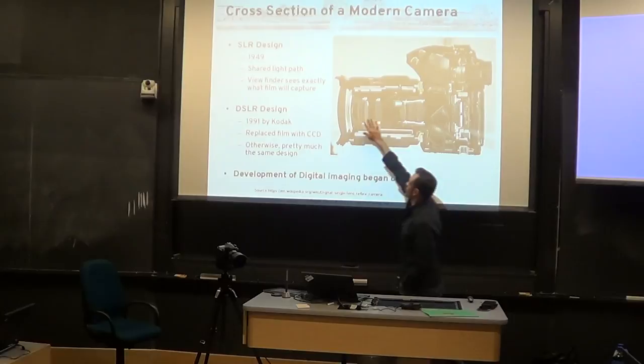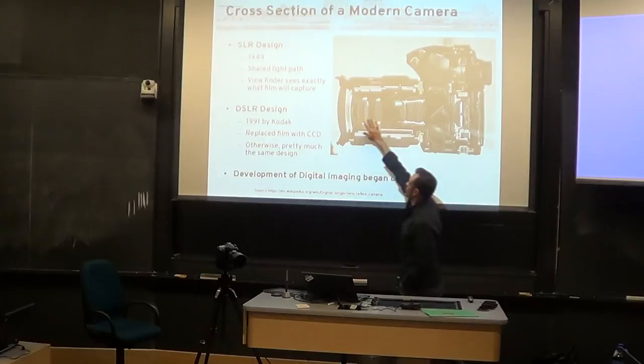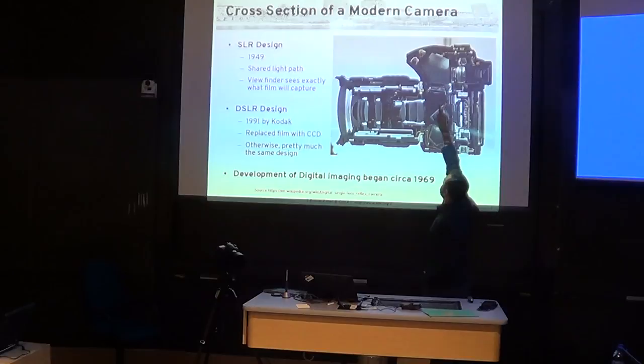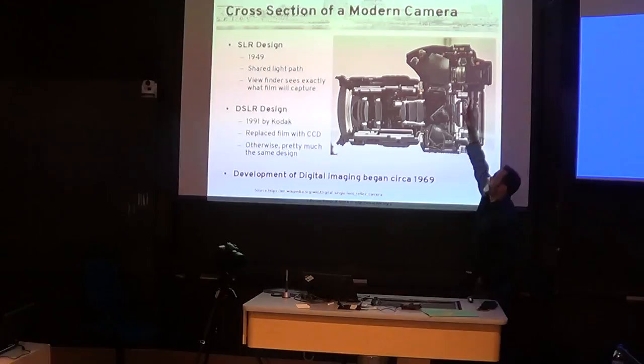As long as the mirror is down, the light path that comes in through the lens hits the mirror, goes up into the pentaprism, where it bounces around and then comes out the eyepiece. There's nothing digital about that piece of it — this is still traditional single lens reflex camera design. Your cameras from the '80s and '90s all work this way.